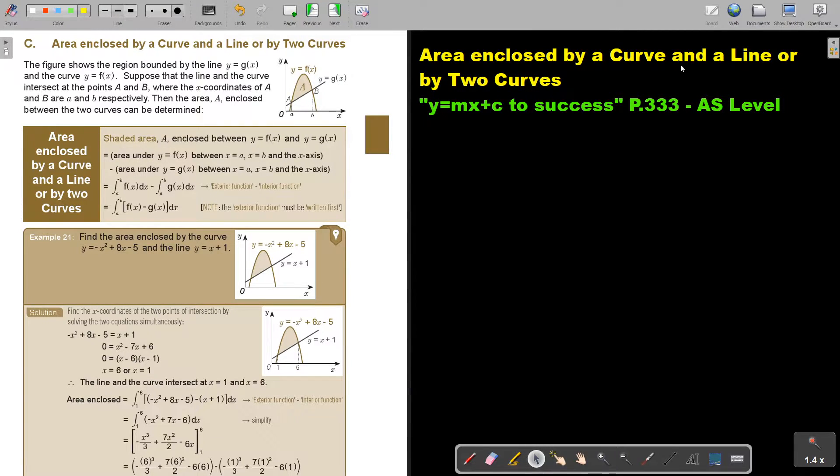Area enclosed by a curve and a line or by two curves. You will find this on page 333 in the Namibia AS Level Mathematics textbook Y equals MX plus C to success.